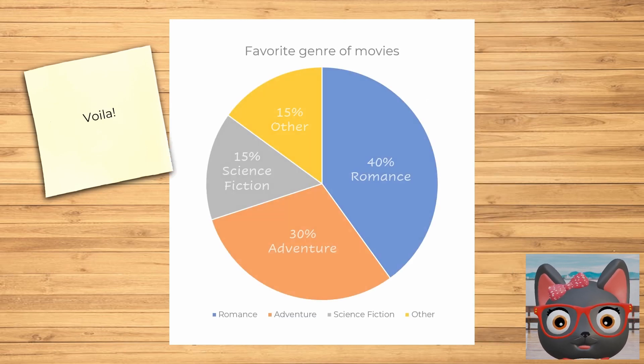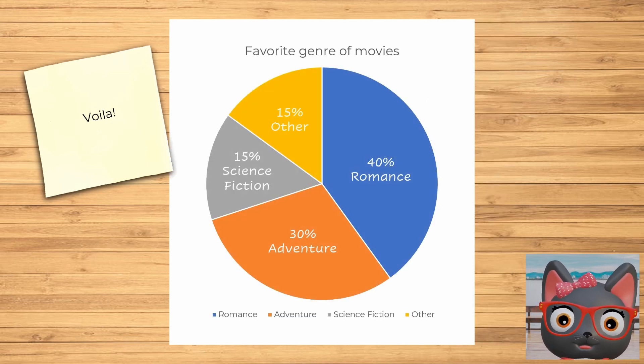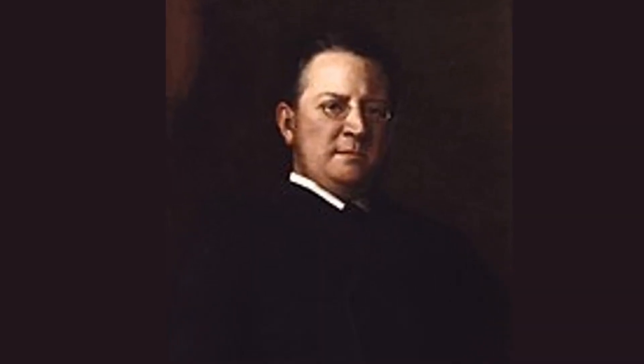And voila! There you have it — our very own pie chart. The original pie chart was developed by William Playfair in the 1700s as a way of showing the proportion of the Turkish Empire in Europe, Asia, and Africa.